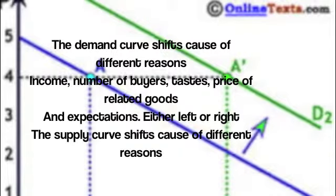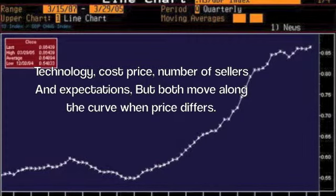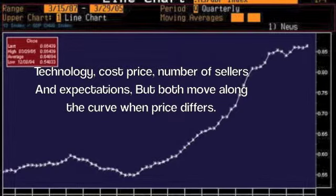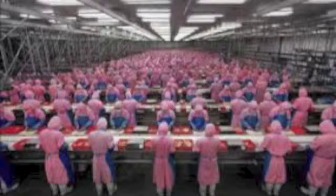The supply curve shifts cause of different reasons: technology, costs, price, number of sellers, and expectations. Both move along the curve when price differs.